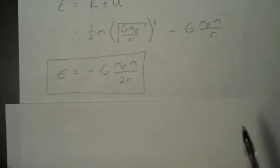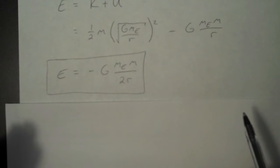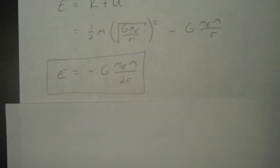So for instance, if you have negative 20 times 10 to the 10 joules, that means you need 20 times 10 to the 10 joules to escape Earth's gravity. Let's do an example.